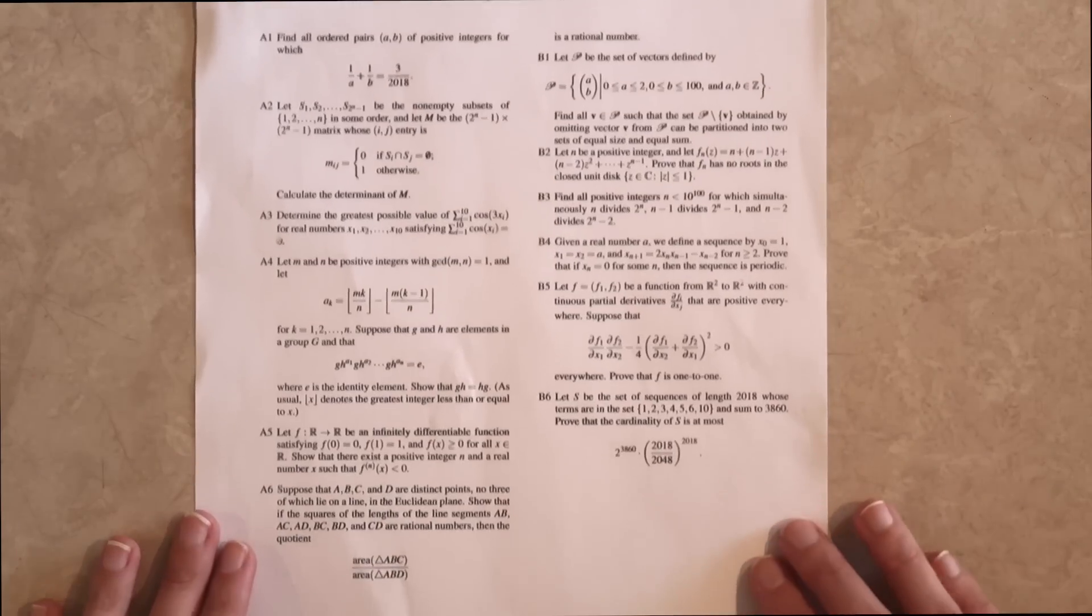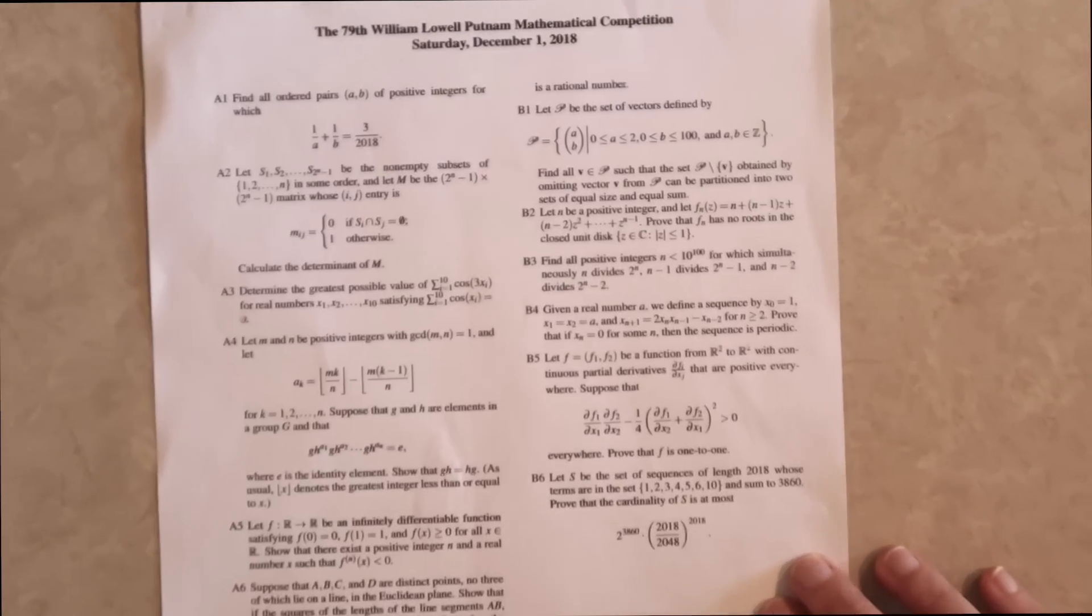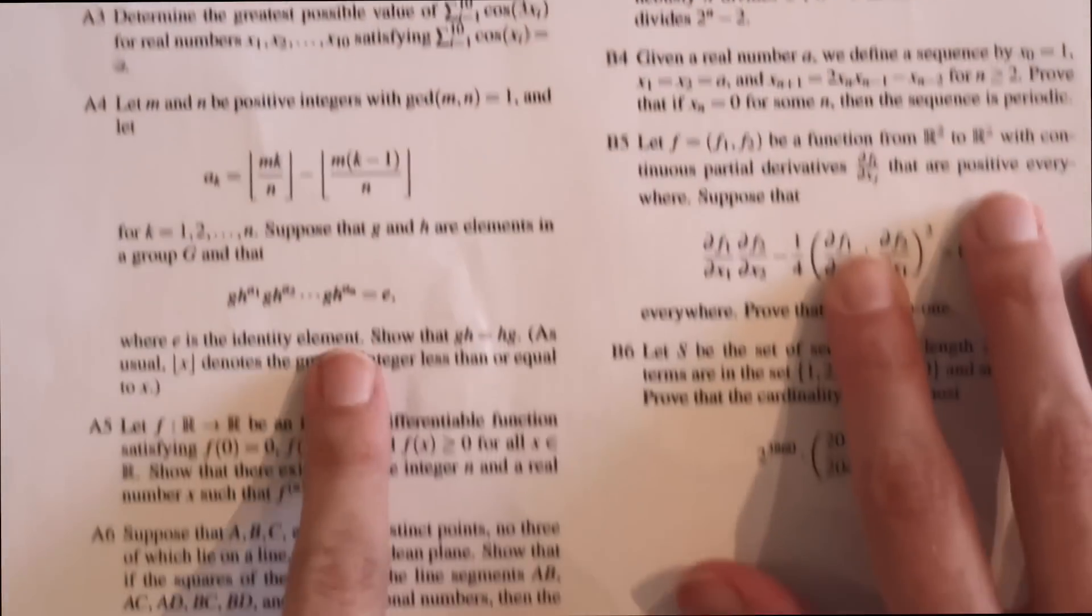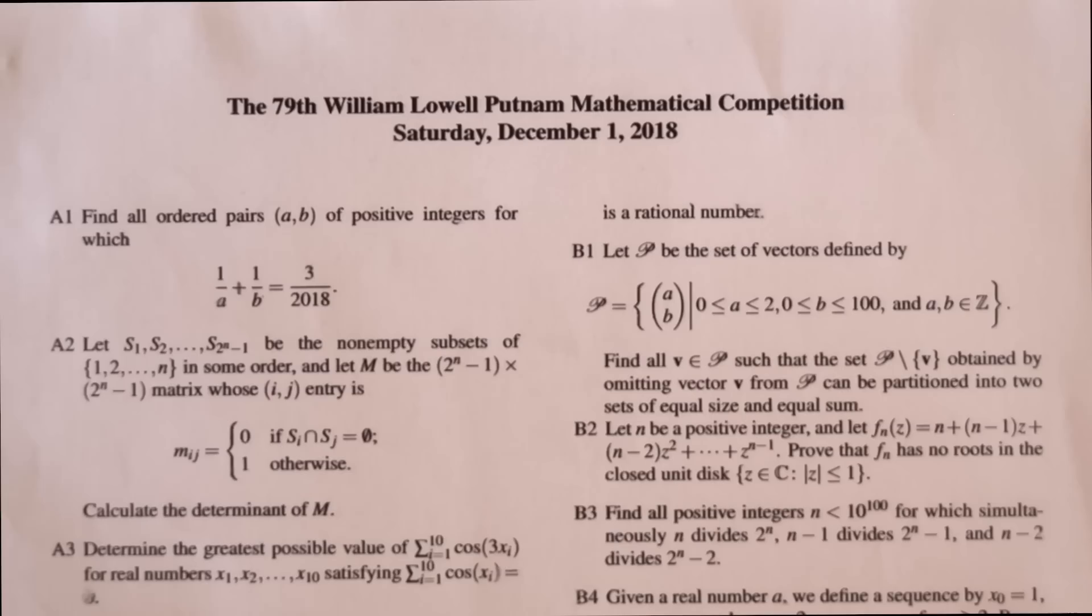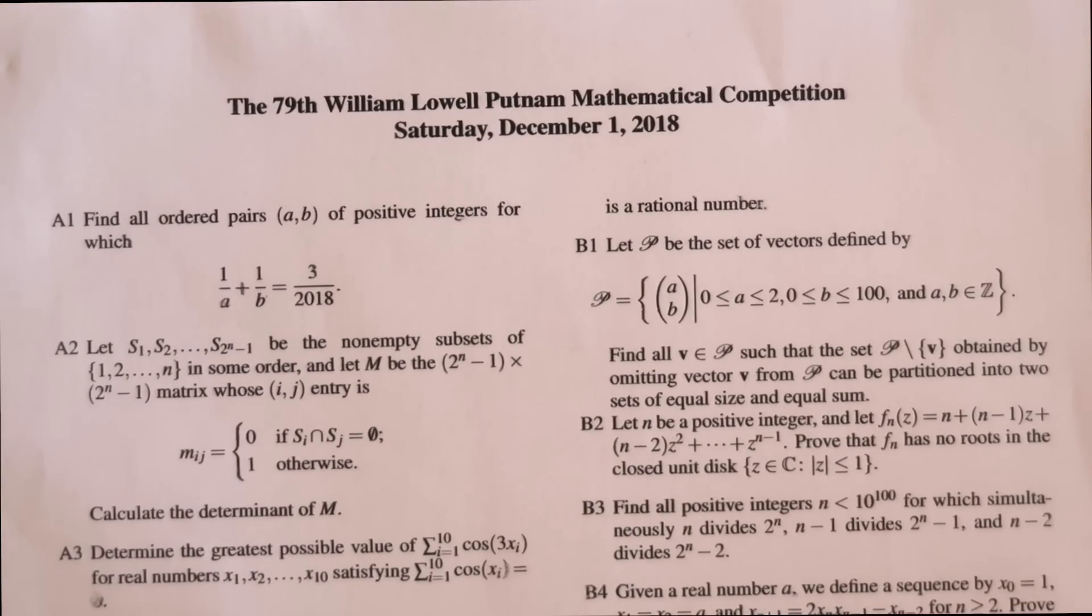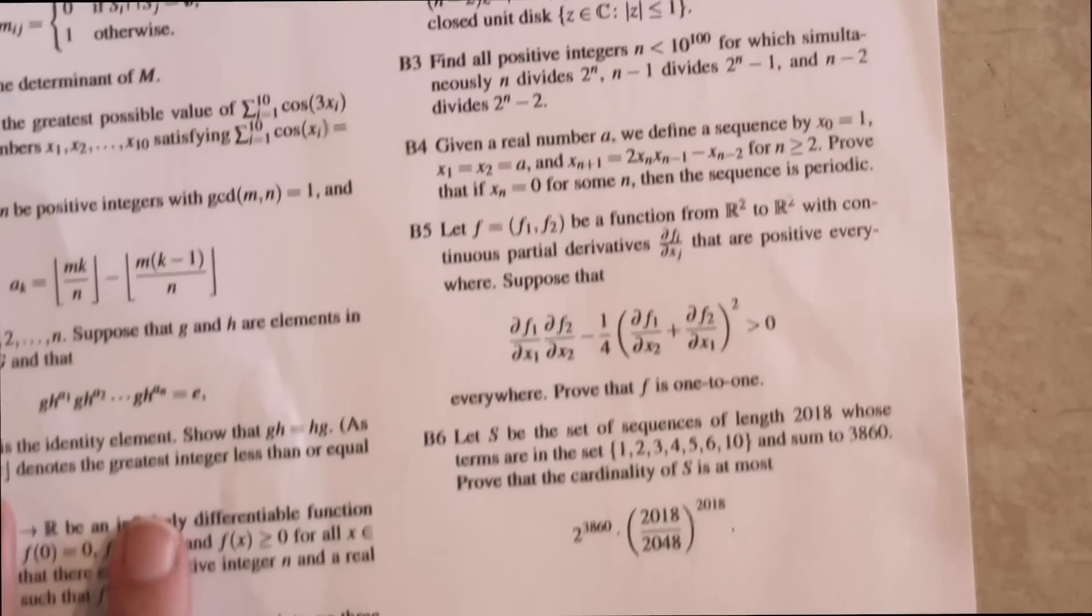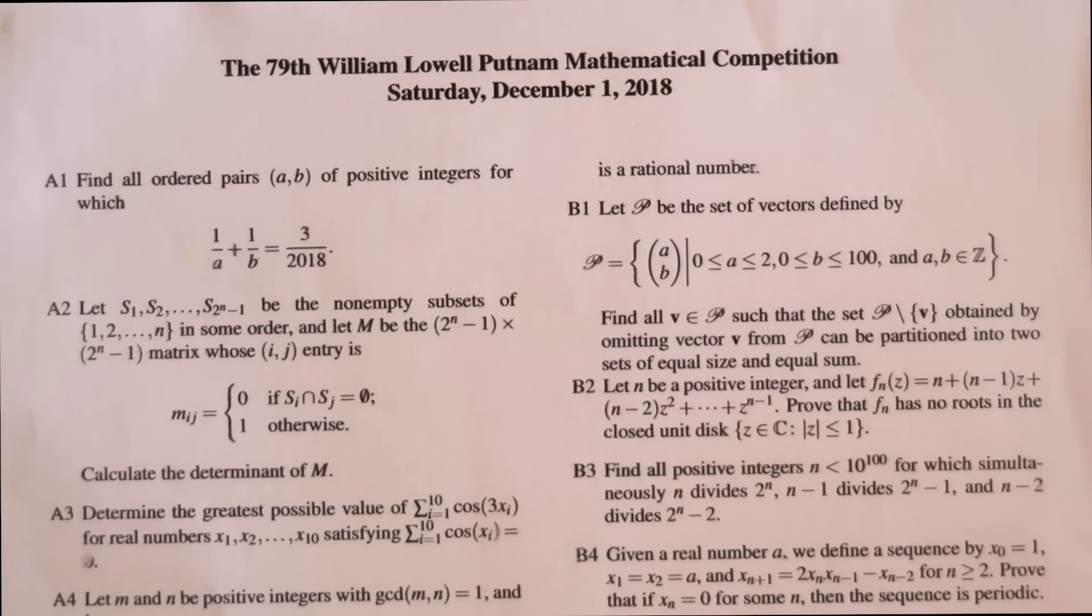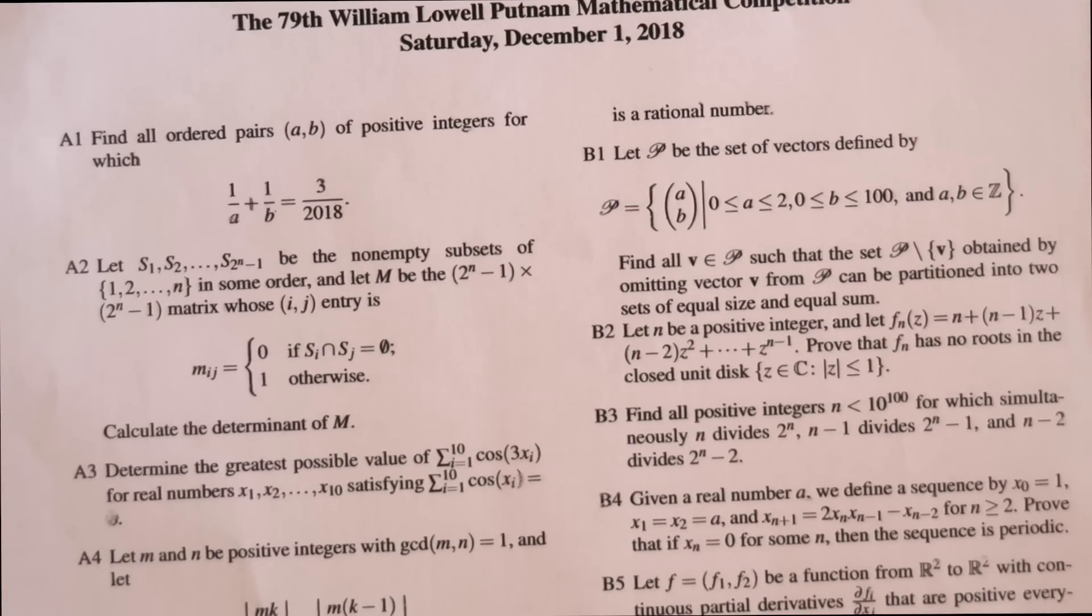So let's have a little look at the questions they had to solve last year. So this is the entire exam here. Now if you want your own copy to follow along with, there'll be a link in the description where you can download this exam. But let's first zoom in a little and take a closer look. Now you might first notice we've got questions A1 to A6 in this first column, and then we've got B1 to B6 down here. So when you're sitting this exam, you actually get two three-hour sessions to work on it with a lunch break in between.